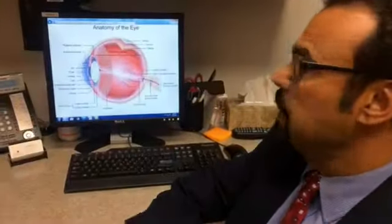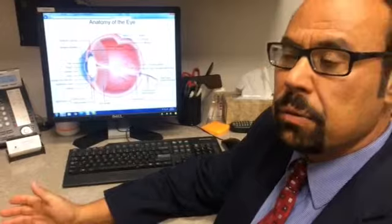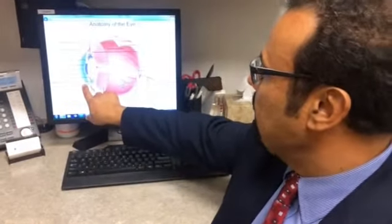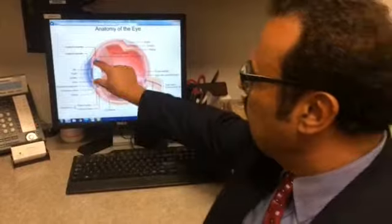It can be done on an outpatient basis and doesn't take anywhere more than 10 to 20 minutes to do the surgery. We make an incision in the clear part of the eye called the cornea, dilate the pupil.